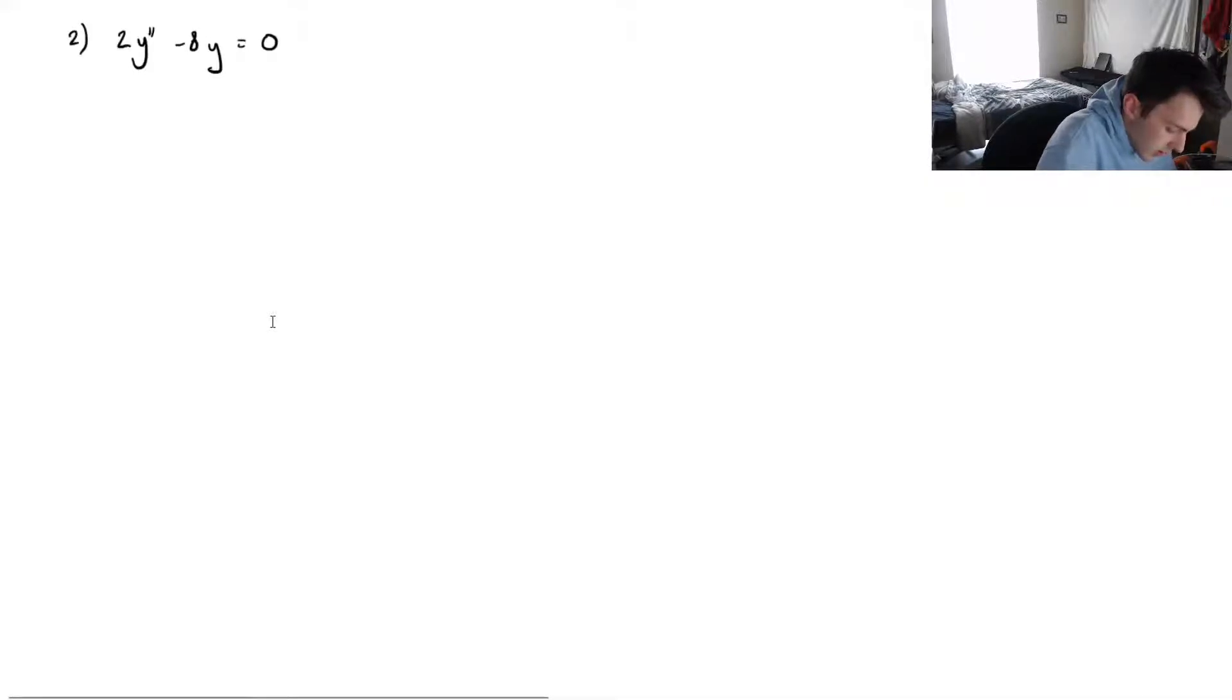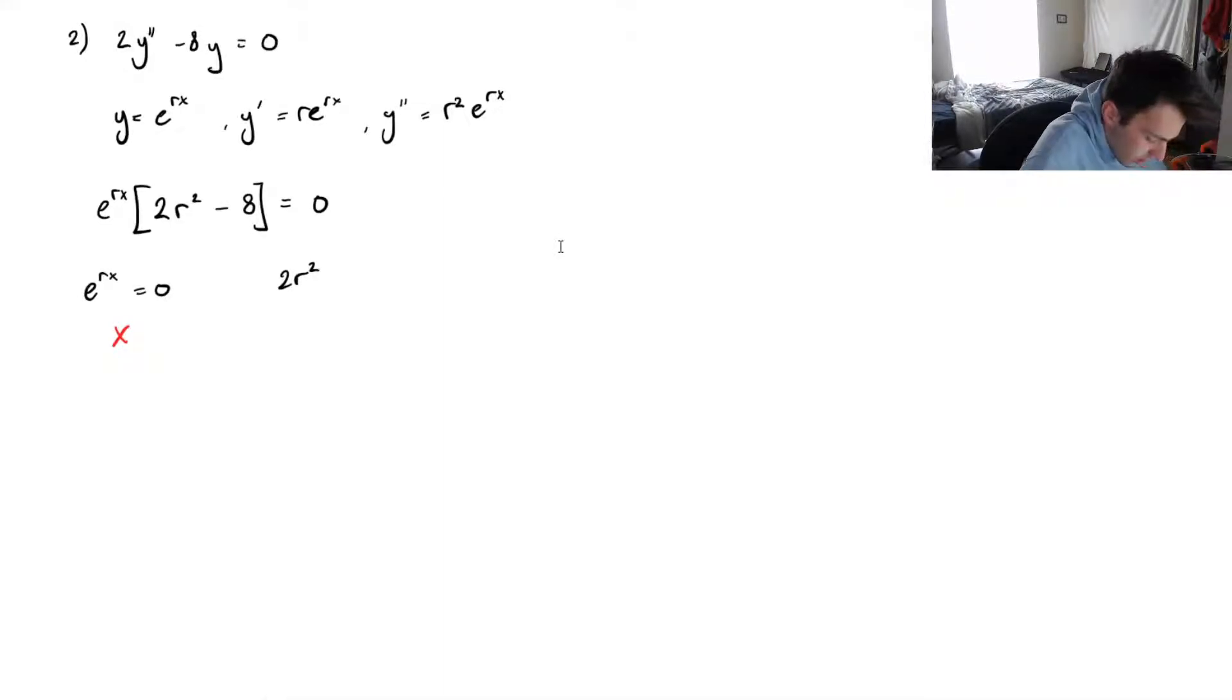Let's go through it once more, really quickly. Basically, we know y equals e to the rx, so y prime is r times e to the rx, y double prime equals r squared e to the rx. So, I'm just going to jump the gun a little bit here. Once we plug everything in, we'll be left with 2 times r squared minus 8, and this all equals zero. We know that e to the rx equals zero will give us no solutions, but we have 2r squared minus 8 equals zero as a solution as well.